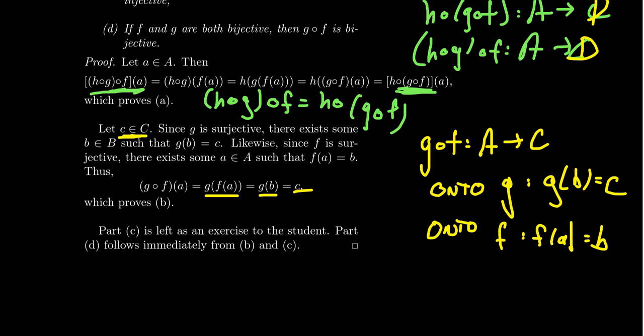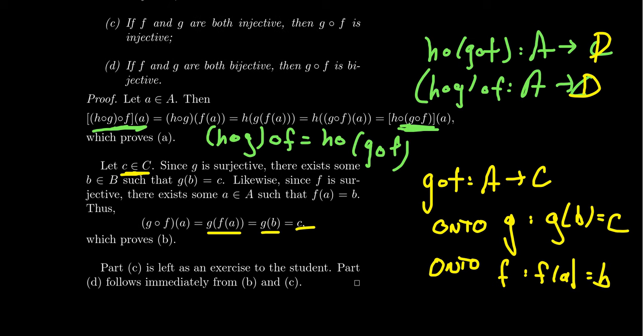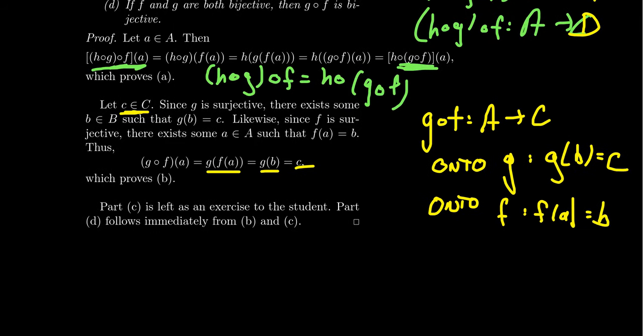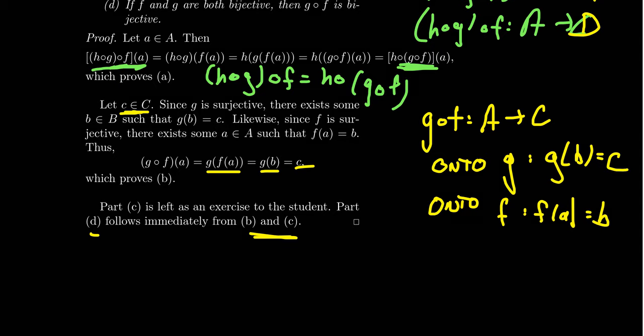It'll be left as an exercise to the student to prove part C. Part C was the composition of two injective functions is injective. Why does the composition preserve one-to-one? Well, look at the definition like we did here. You're going to use the injectivity of F and G to force it together when you compose it. And then finally, if the functions F and G are both bijective, then they're both injective and surjective. If they're both surjective, their composite is surjective. If they're both injective, then their composite is injective. And therefore, the composite will both be injective and surjective, which is bijective. So part D follows immediately from parts B and C. It'll be left for the viewer here to answer part C to provide a proof of that. And it's not so bad. If you believe in yourself, I think you can work through it.